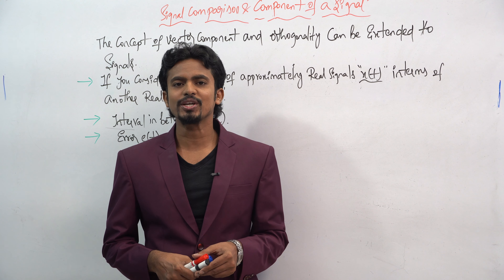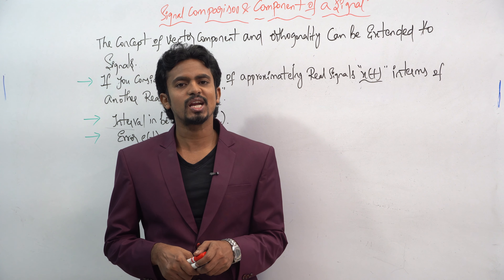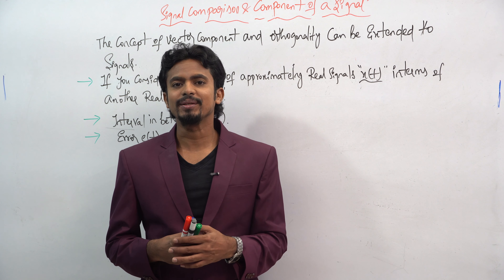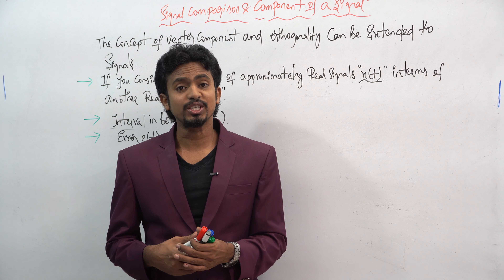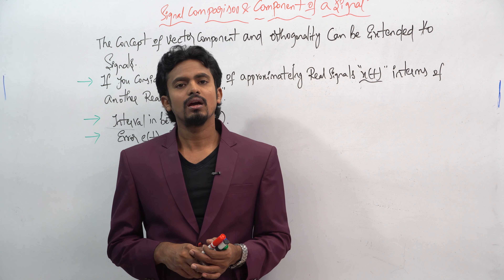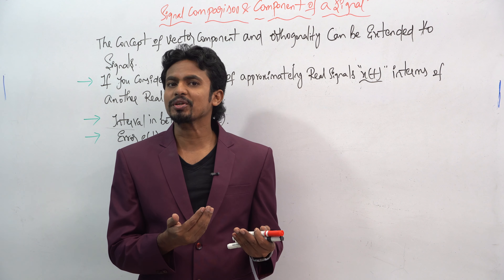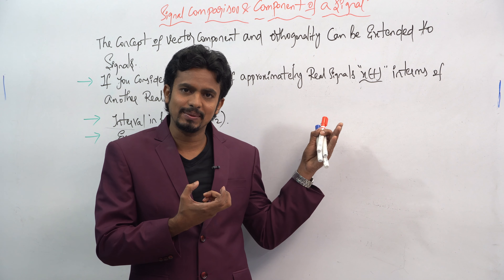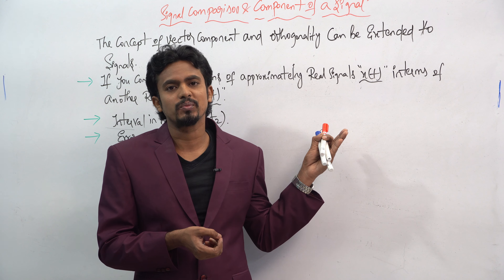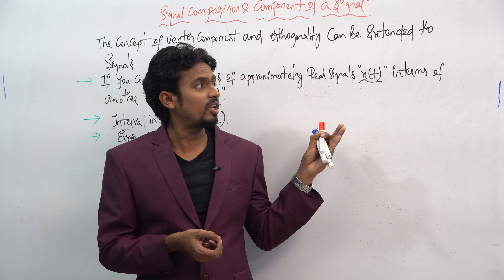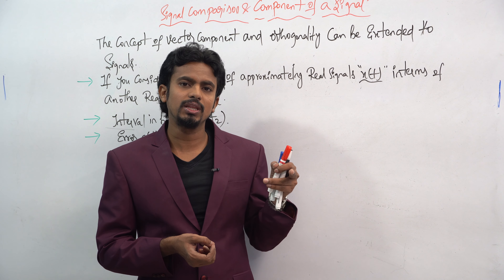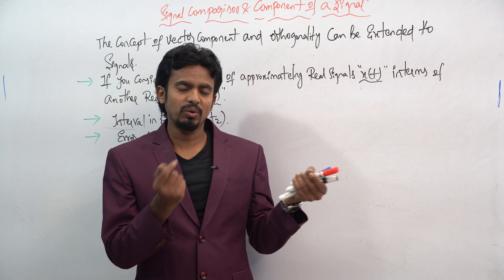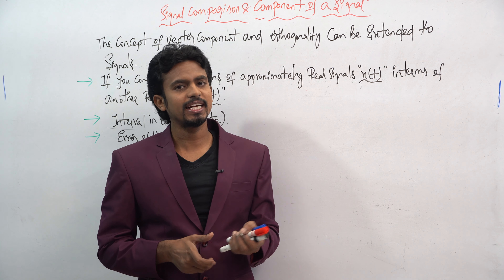Before we look at the concept of what is meant by signal and what is meant by vector, and how signals and vectors are correlated to each other, as well as what is meant by the orthogonality property. We take a simple coordinate system where we can see how the component of x and the component of y differ by 90 degrees.